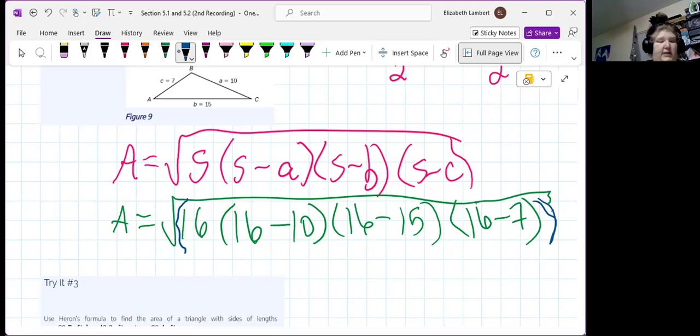I have to put times in between them. So, there's my 16 minus 10, close, times, open, 16 minus 15, close, times, open, 16 minus 7.